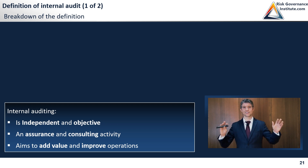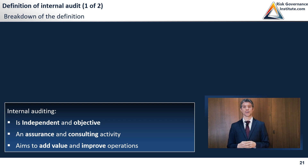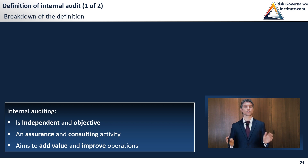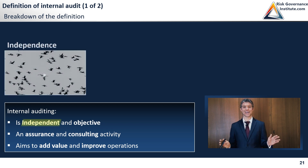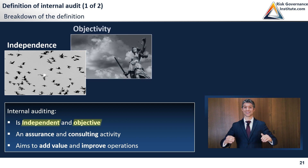Internal auditing is an independent and objective assurance and consulting function. Oh, actually I can quote it, but let's try to break it down. So the first part of the definition starts with the two most important attributes for an internal auditor and internal audit services. And that is independence — that is an important concept — and, wait for it, objectivity, which I'm just going to say is also an important concept.